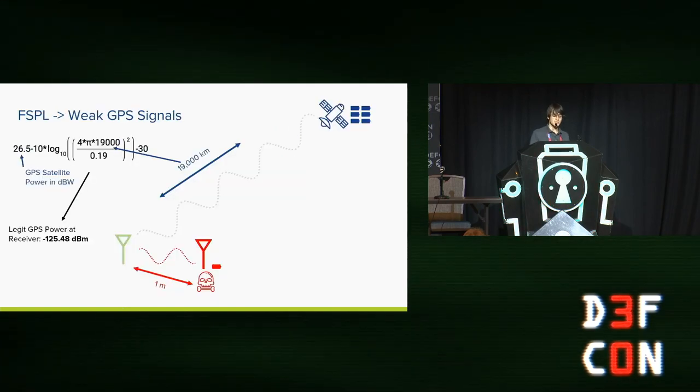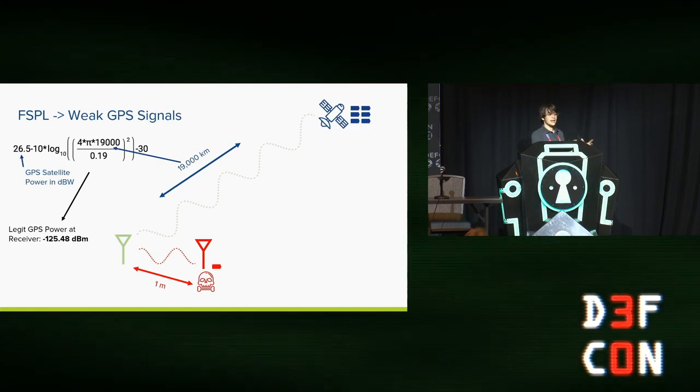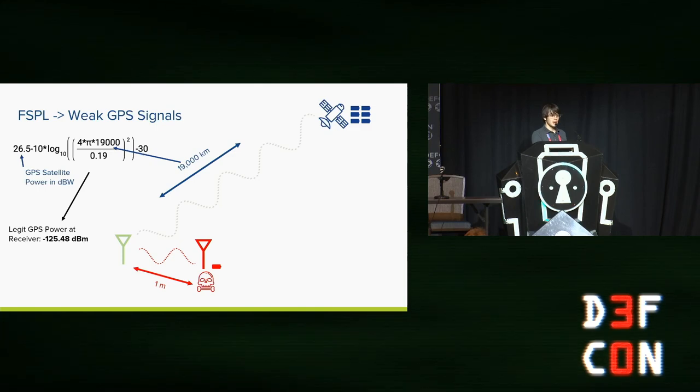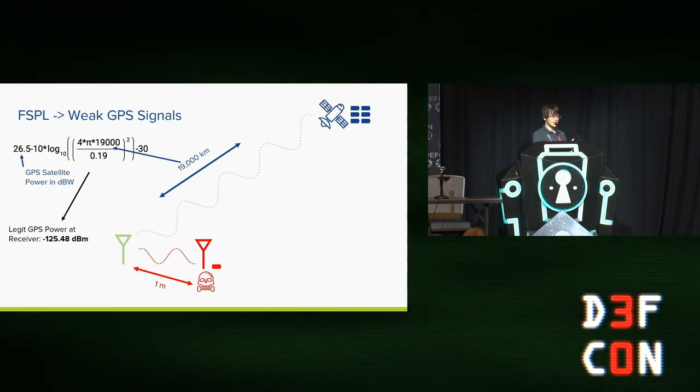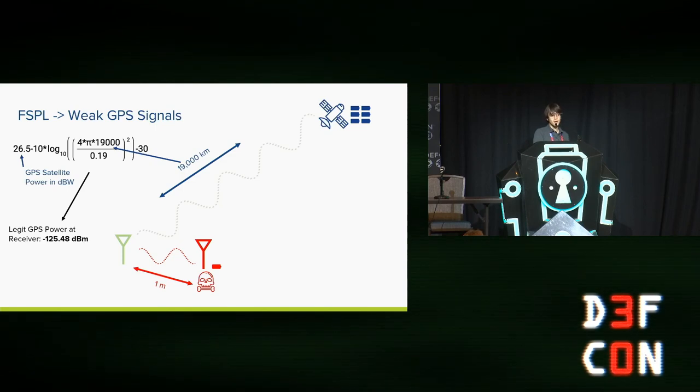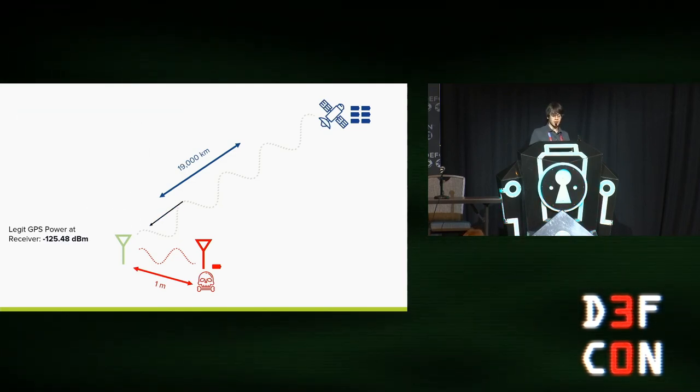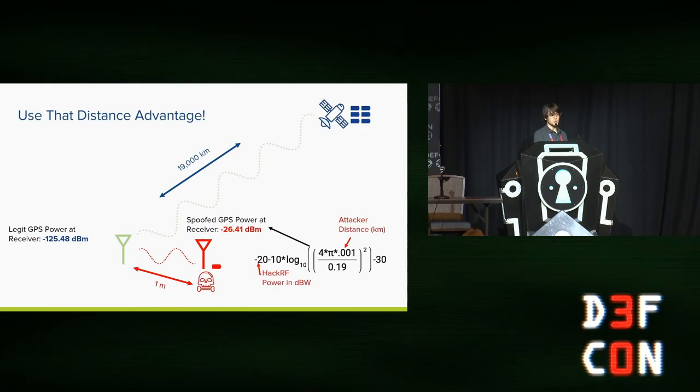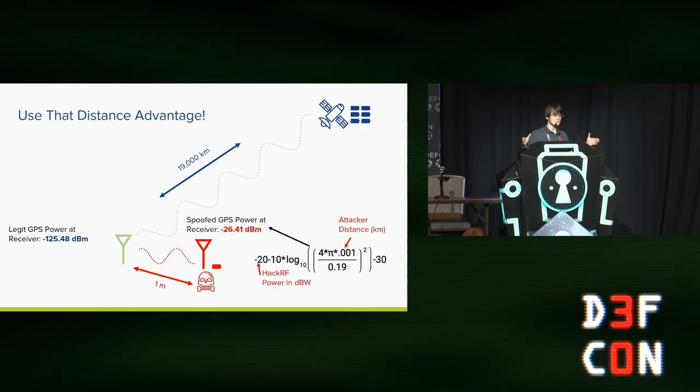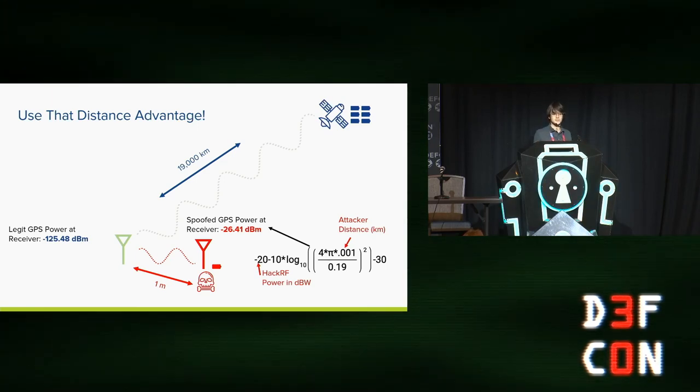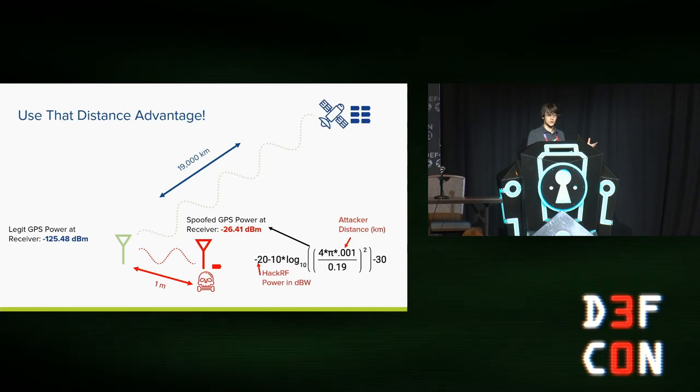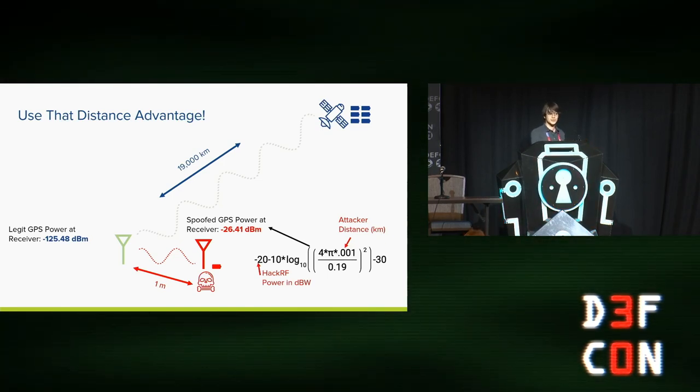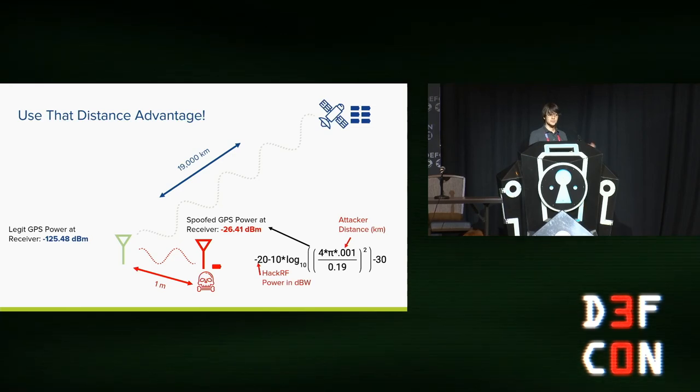And if we plug in the numbers to that free space path loss equation, we can start to see why. So the signal that comes from a GPS satellite is really weak by the time it travels all 20,000 kilometers from MEO to the earth's surface to the antenna on your cell phone. Meanwhile, the signal that comes from a relatively weak transmitter on your lab bench is still much stronger because it doesn't have that massive amount of time to be losing power to free space path loss. And that's the crux of a GPS interference attack. You take advantage of physical proximity in order to be able to override GPS signals. If you have the right protocols, you can even spoof them. But fundamentally, it's just about shouting the loudest.